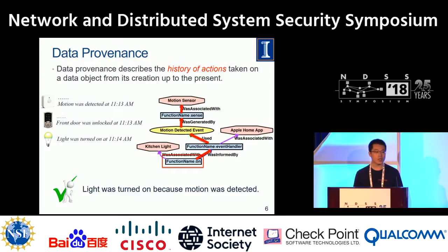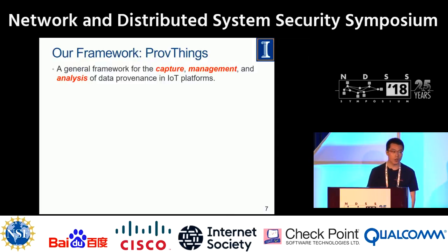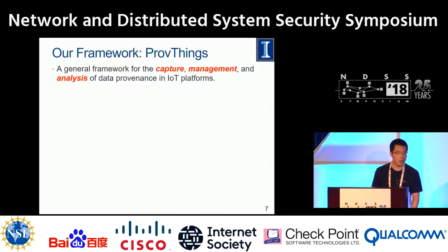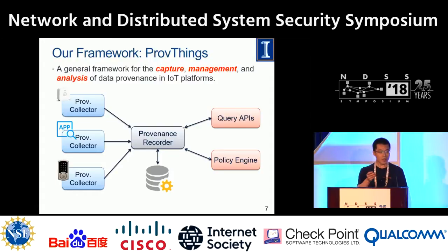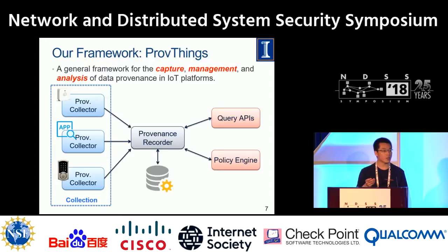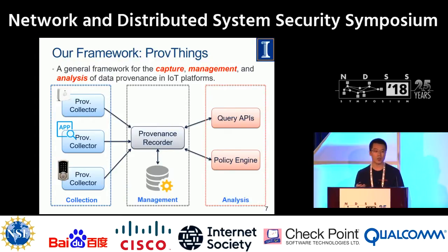So in this paper, we propose our framework ProveThings, which is a general framework for the capture, management, and analysis of data provenance in IoT platforms. This is a high-level architecture of our framework. We modularize the design into a collection module, a management module, and an analysis module.